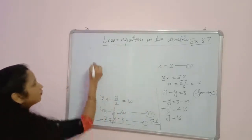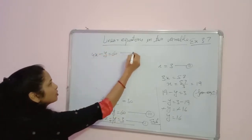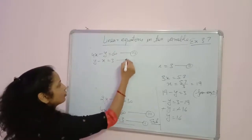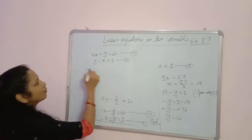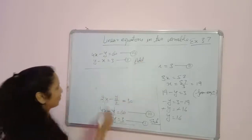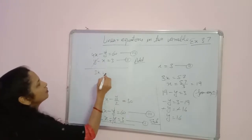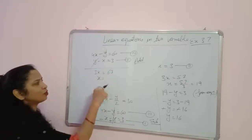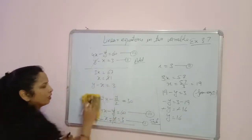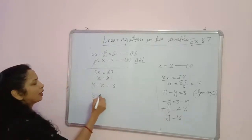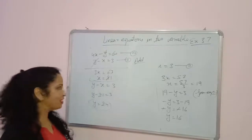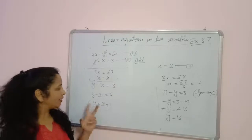Solving equation 3 (4x minus y equals 60) with equation 2 (y minus x equals 3), where Biju is bigger than Ani. Both y terms have the same coefficient with a positive sign, so we add the equations to cancel y. We get 3x equals 63, so x equals 21. Putting x equals 21 into equation 2: y minus 21 equals 3, so y equals 24. In the second case, Ani's age is 21 years and Biju's age is 24 years.